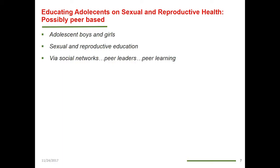Another long-term problem is educating adolescents on sexual and reproductive health, possibly using a peer-based approach. We might take an approach similar to work we've done using social networks to educate people. But the cultural context here may be far more complex, so it wasn't clear if from an AI perspective it would be as interesting, though it is certainly a very complicated problem.